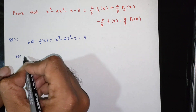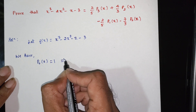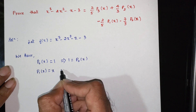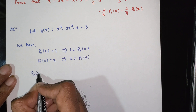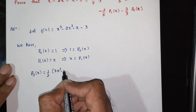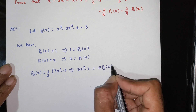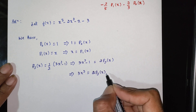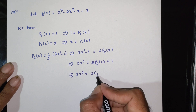We have the Legendre polynomials: P0 of x is 1, so 1 is equal to P0 of x. P1 of x is x. P2 of x is 1 by 2 into 3x square minus 1, which implies 3x square minus 1 is equal to 2 P2 of x, and therefore x square is equal to 2 by 3 P2 of x plus 1 by 3 P0 of x.